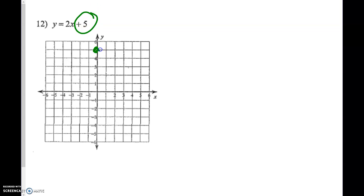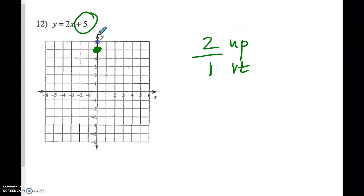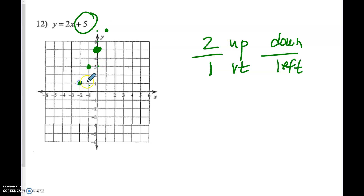Number 12: the y-intercept is 5, so put your dot right there. Our slope is 2, and remember we put a 1 underneath it. I'd like to go up 2 and right 1, but notice — when I go up 2 and right 1, am I off this graph? So I absolutely have to go the other way: down 2 and left 1. All of these points are in a nice straight line. Is it proportional or non-proportional? This one is non-proportional because it does not go through the origin.